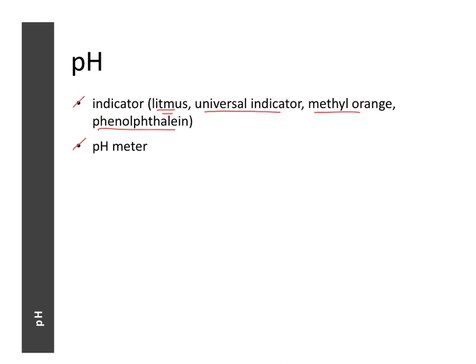The other method is to use a pH meter, which is like a data logger connected to a pH sensor. When the sensor is dipped into a solution, it picks up the concentration of hydrogen and hydroxide ions and registers a numerical value — for example, 5.2 — giving a more accurate pH reading compared to indicators.